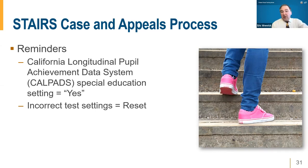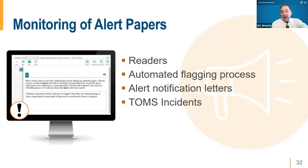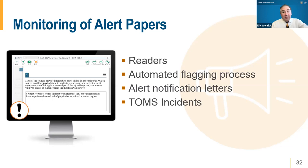As part of the process of scoring all assessments, readers and the automated flagging process come across student responses that warrant an LEA's immediate attention. This can happen during the regular course of the year — if you're doing IABs and FIABs that involve writing, or even note-taking guides, the system catches concerning content. The alert system flags responses where a student may have experienced physical or emotional abuse or neglect, where a student may be harming themselves or threatening to harm others, or if they're experiencing severe distress. You will get notified when these are flagged.